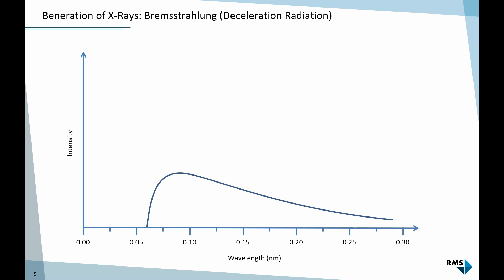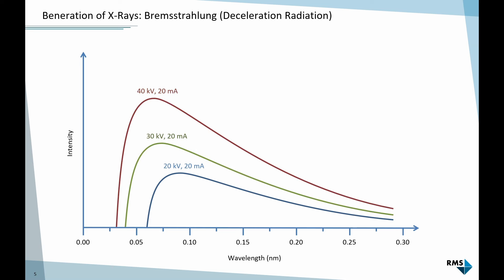The Bremsstrahlung spectrum has an upper limit because the electrons cannot release more energy than their full kinetic energy — so a full stop is the maximum. This depends on the acceleration voltage applied to the electrons. Below that upper limit, for lower energy or longer wavelength, it is a continuous spectrum. By increasing the acceleration voltage, we can shift this upper limit towards shorter wavelength or higher energy. That's the only control we have over Bremsstrahlung.